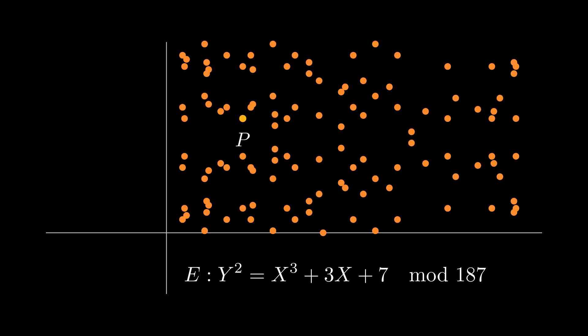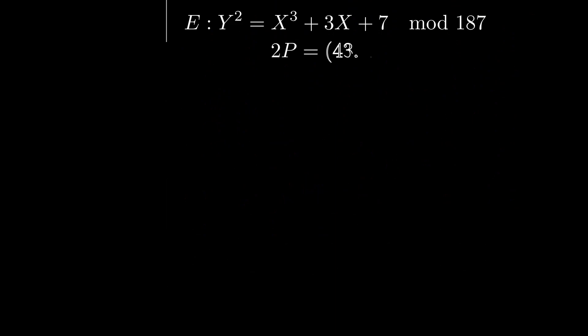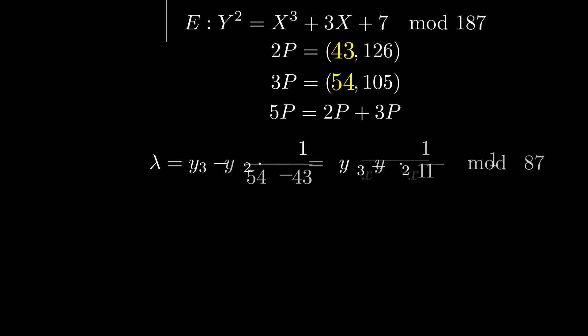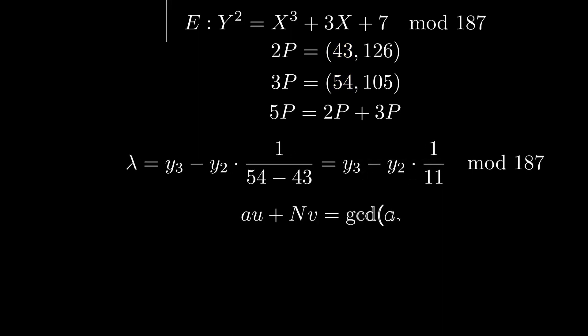Well, let's say we were trying to add this point to itself over and over around the curve. Using the slope formula, we need to do modular division, which means we need to find the modular multiplicative inverse of 11. This requires the computation of the GCD of 11 and 187, which is 11.